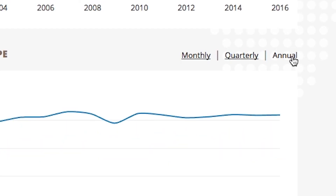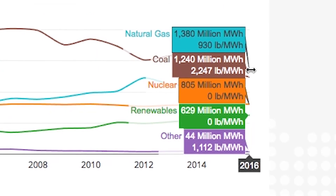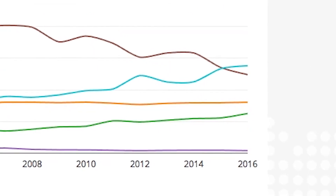For example, we are able to detect that in recent years and in recent quarters, natural gas generation surpassed the generation from coal. We're going to update the Power Sector Carbon Index every three months, which is the timeline when the government releases the data that enables us to update the website.